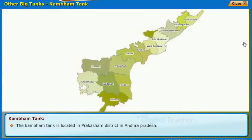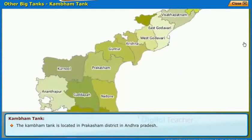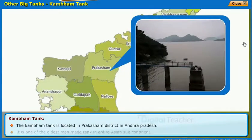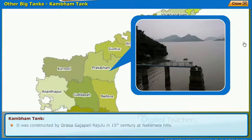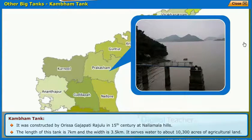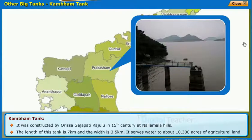The Kambam tank is located in Prakasham district in Andhra Pradesh. It is one of the oldest man-made tanks in the entire Asian subcontinent, constructed by Orissa Gajapati Rajalu in the 15th century at Nallamala Hills. The length of this tank is 7 km and the width is 3.5 km. It serves water to about 10,300 acres of agricultural land.